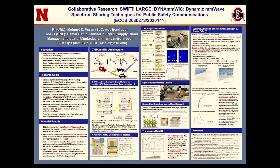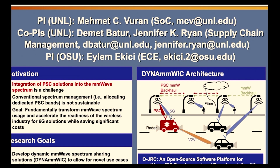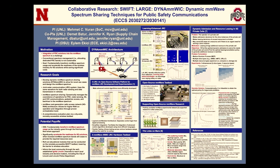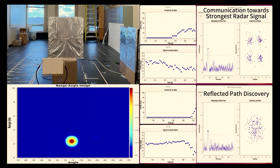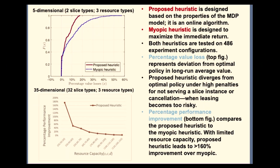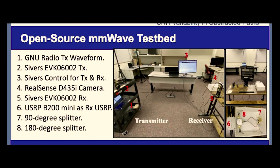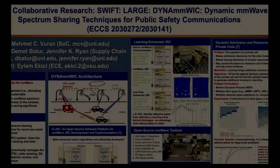I'm John Rahn from University of Nebraska-Lincoln. Our project title is 'Dynamic Millimeter Wave Spectrum Sharing Techniques for Public Safety Communications.' This project is in collaboration with Dr. Ayla Mekiji from Ohio State, as well as Dr. Demet Batur and Jennifer Ryan from Supply Chain Management at University of Nebraska-Lincoln. Our goal is to integrate millimeter wave solutions into public safety communication approaches. We are developing dynamic millimeter wave spectrum sharing solutions to allow for novel use cases, including a joint radar-communication system, millimeter wave spectrum sharing especially in a private cell context considering business incentives such as leasing, as well as next-generation radio access network solutions including channel characterization in unique environments. We are excited to talk to you. Thank you.